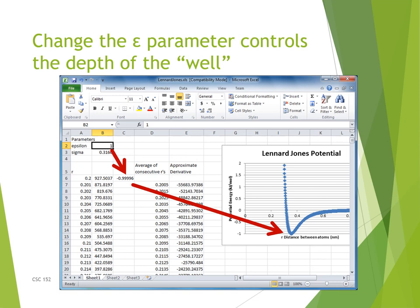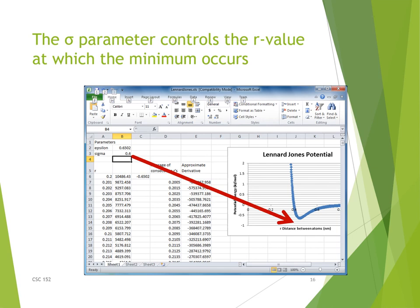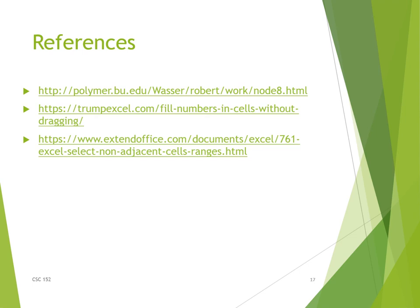Now let's play with our parameters and watch the XY scatter plot adjust. If I raise the epsilon value to 1, the minimum of the dip goes down toward minus one — so epsilon is the depth of the well. When I change sigma to 0.4, it moves the dip horizontally — changing sigma pushes the dip over. Finally, here are some references: one for the Lennard-Jones potential itself, and two others for Excel filling and selecting techniques.